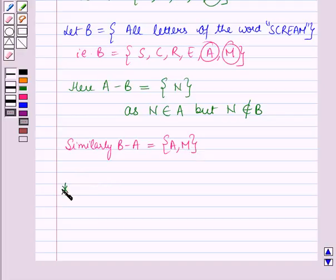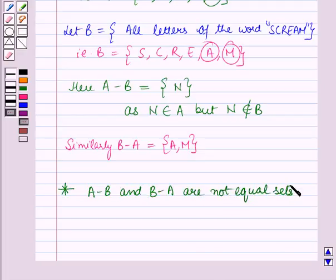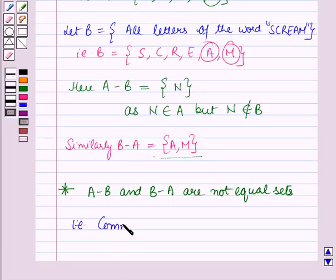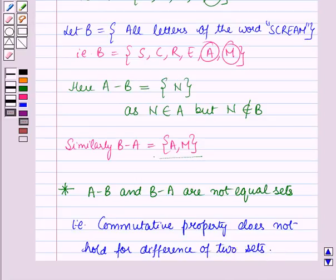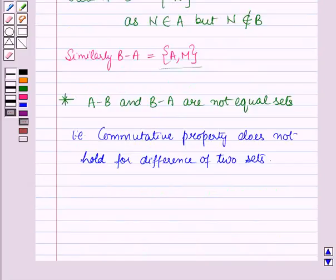So we can say A minus B and B minus A are not equal sets, as A minus B is not equal to B minus A. That is, the commutative property does not hold for the difference of two sets.